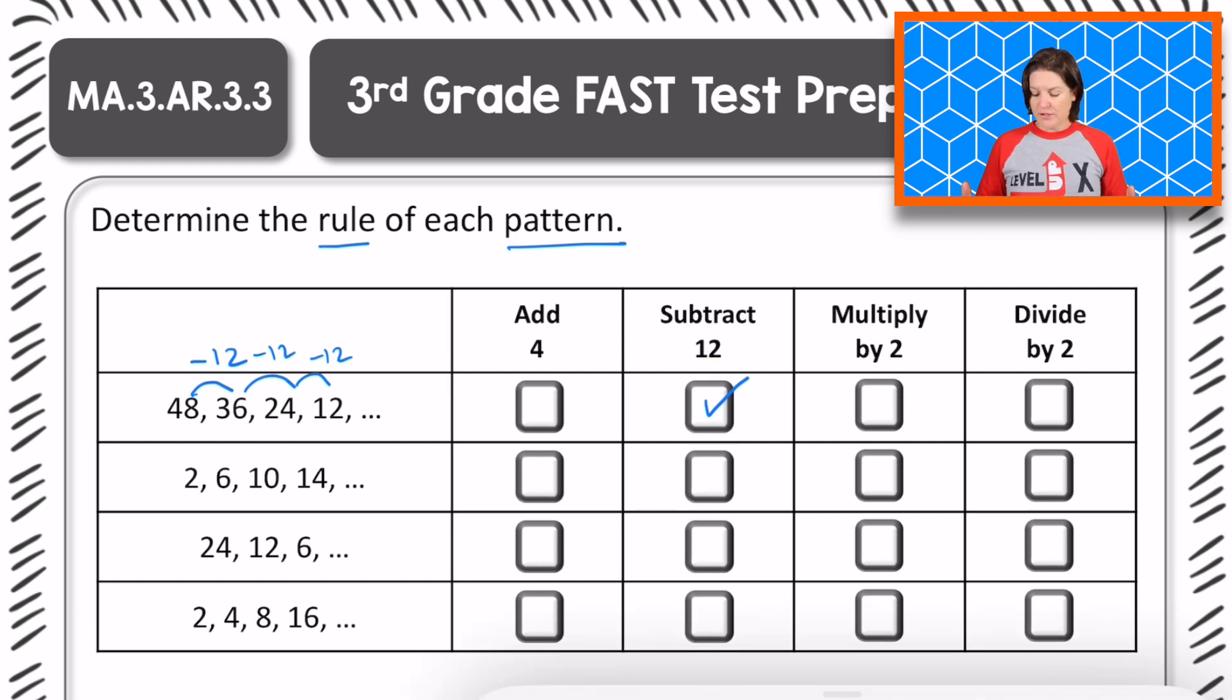Let's take a look at the next one. We have 2, 6, 10, and 14. Are we increasing in value or decreasing? We're increasing this time, which means we are either adding or multiplying. Let's try addition first to see if that works.